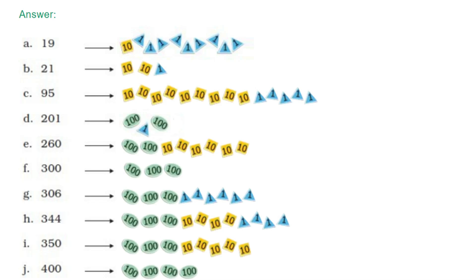For 260: two 100-cards and six 10-cards. For 300: three 100-cards. For 306: three 100-cards and one triangular card with 6. For 344: three 100-cards, four 10-cards, and four 1-cards. For 350: three 100-cards and five 10-cards. For 400: four 100-cards.